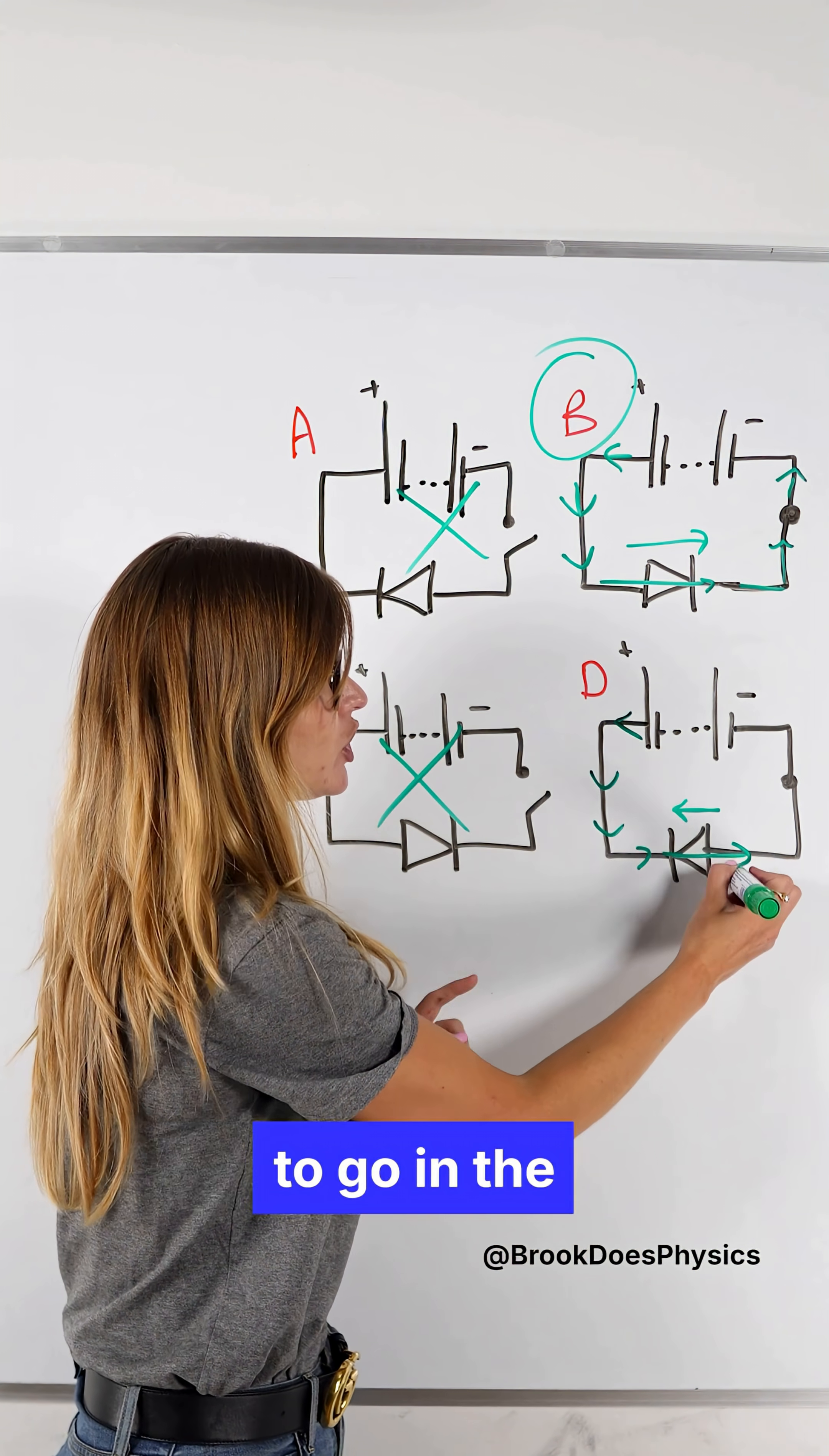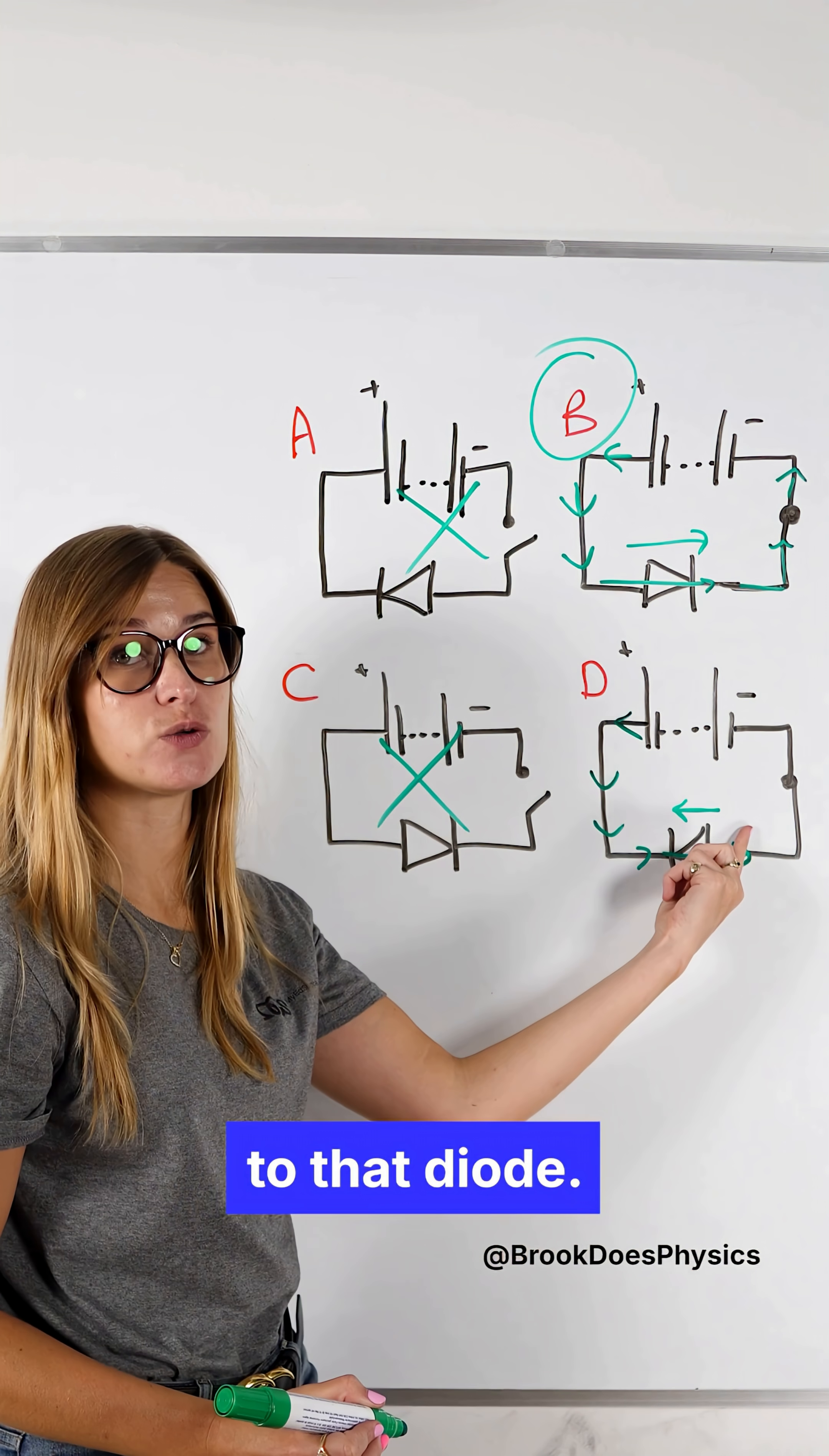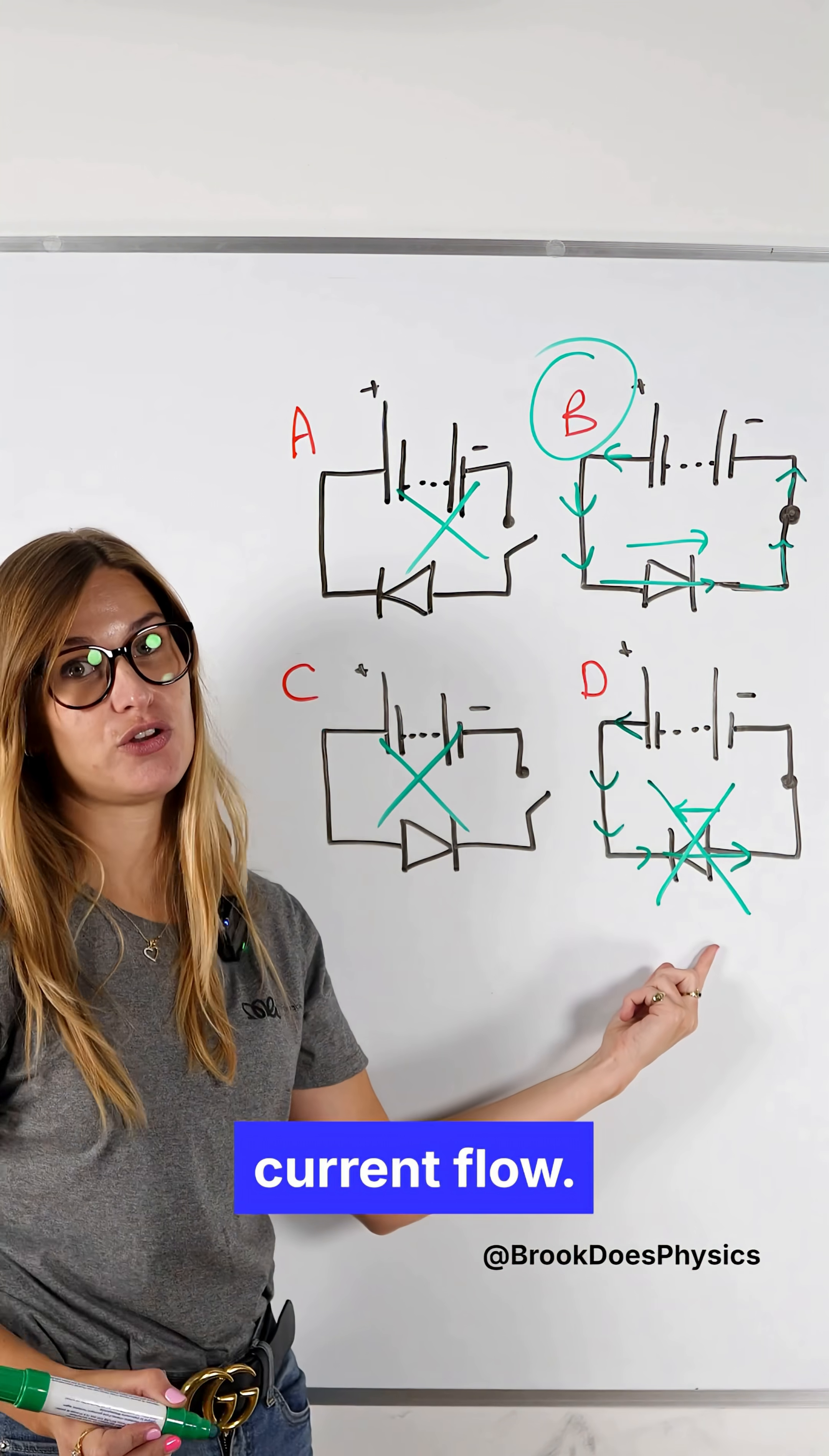Whereas here we can see that the current is trying to go in the opposite direction to that diode so the diode won't let the current flow.